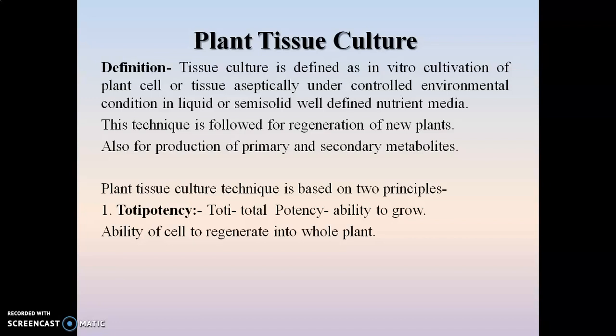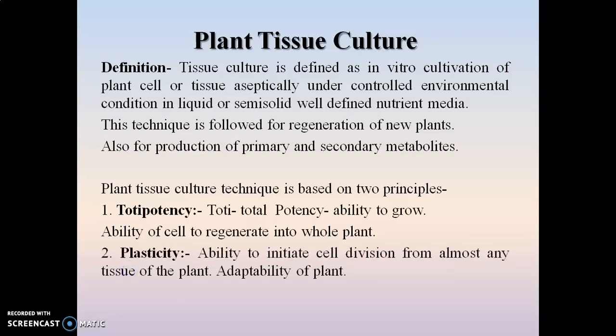Whatever cell or tissue is selected as an explant must possess this totipotency property. The second property is plasticity — the ability to initiate cell division from almost any tissue of a plant, or adaptability of a plant to different environmental conditions by changing its metabolic pathway. Due to this property, plant cells or tissues can grow in artificial environmental conditions and develop into a new plant.